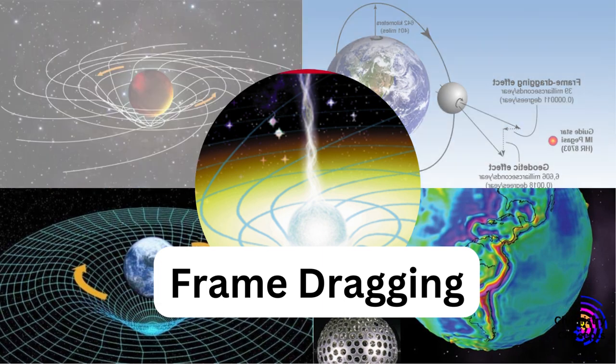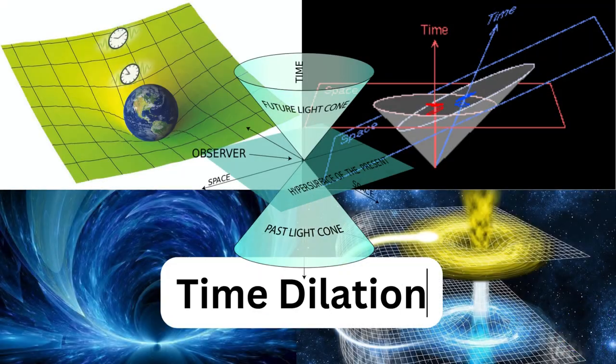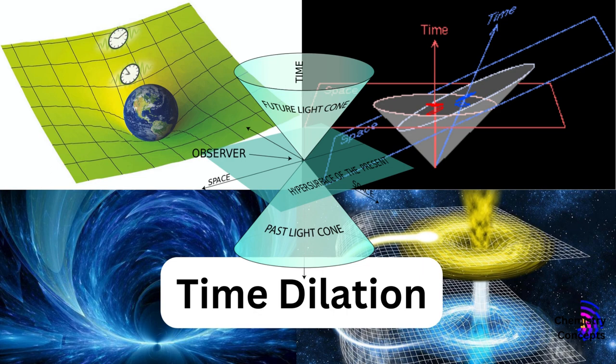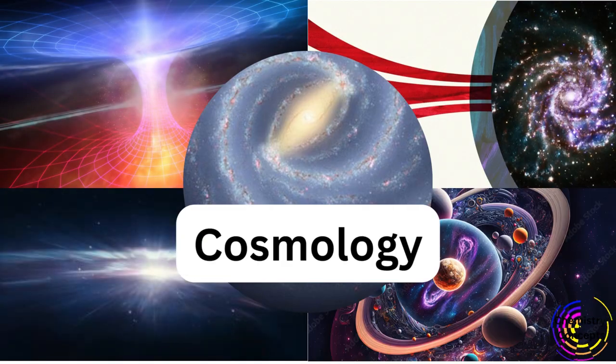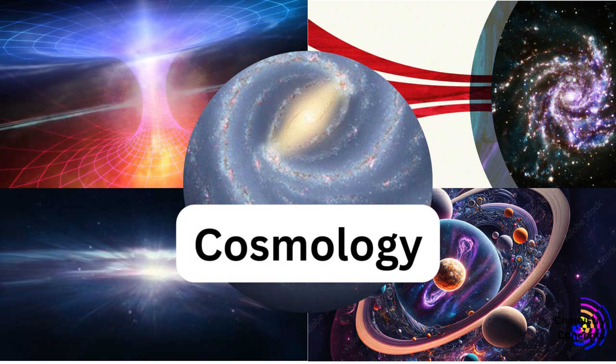General relativity predicts that time runs differently depending on the strength of the gravitational field. General relativity forms the basis of modern cosmology, explaining the large-scale structure and the evolution of the universe.